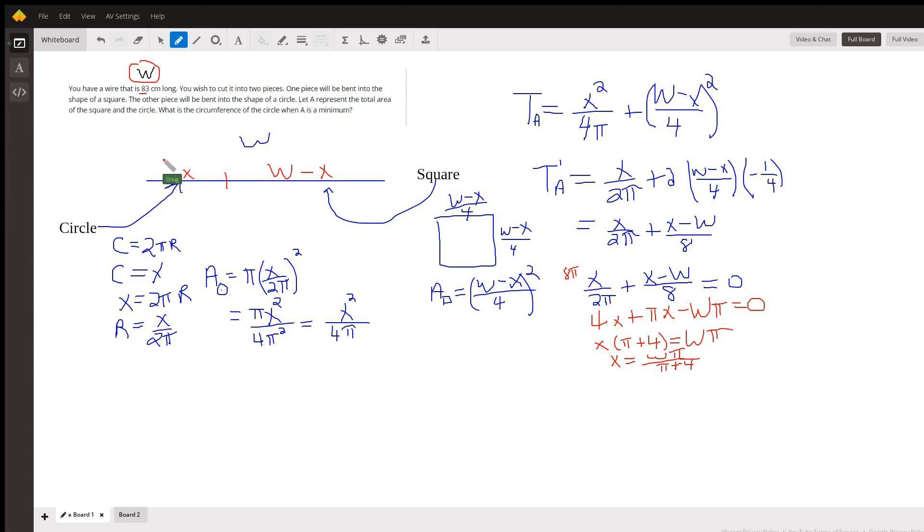And we're going to choose to bend or shape the length of wire that is represented by x into a circle. And now, in terms of x, we'd like to find a formula for the area of that circle.